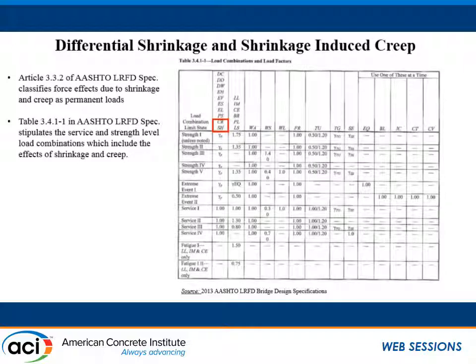Article 3.3.2 of AASHTO LRFD specifications classifies force effects due to shrinkage and creep as permanent loads. And Table 3.4.1-1 in AASHTO LRFD specifications stipulates the service and strength level load combinations which include the effects of shrinkage and creep. So shrinkage and creep, or the structural effects of shrinkage and creep, are things that we are supposed to design for. How do we go about quantifying the structural effects of shrinkage and creep in a composite bridge system?